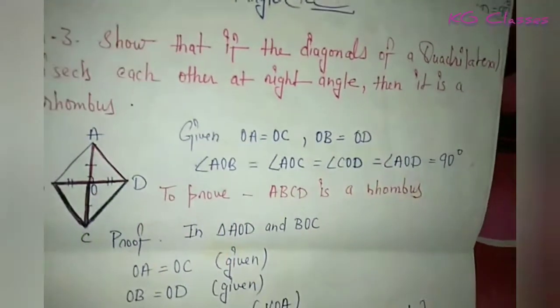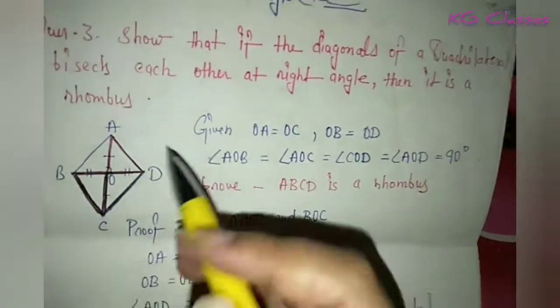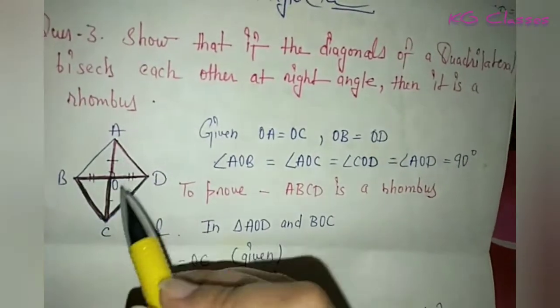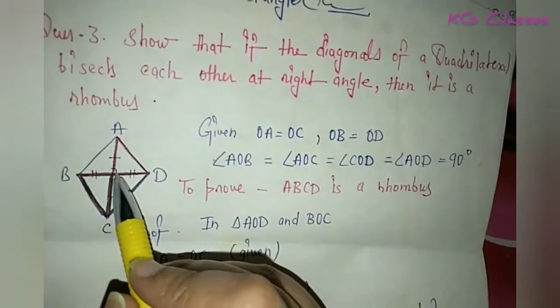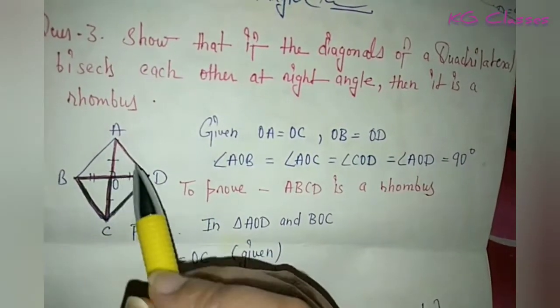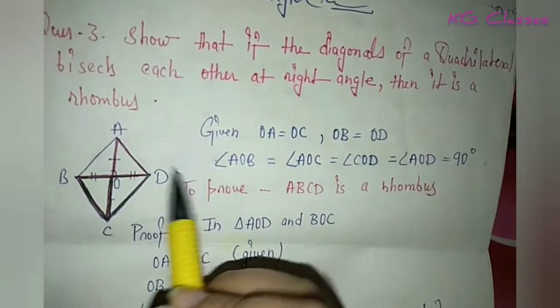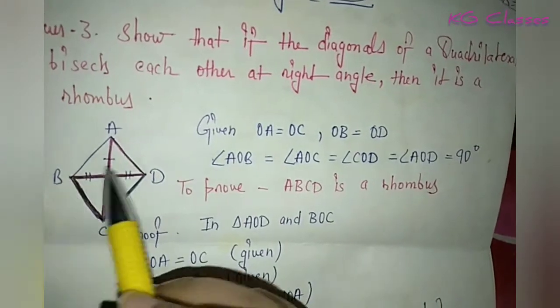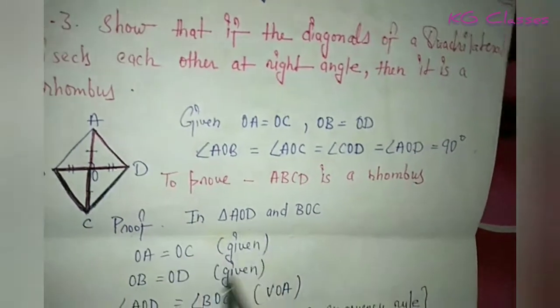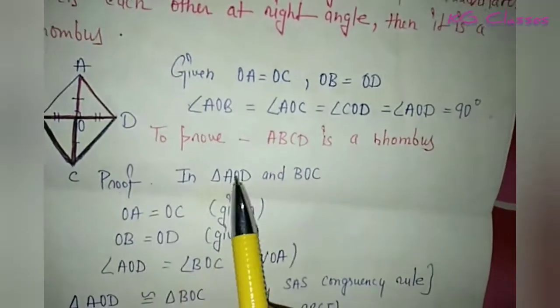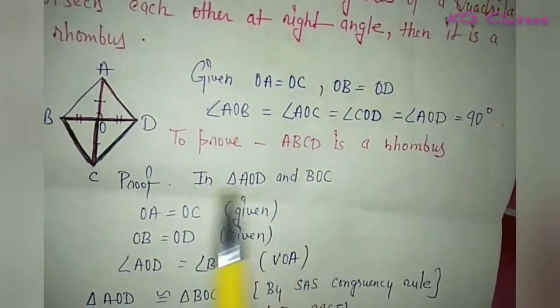This is a rhombus. So we have to consider triangle AOD and triangle BOC.